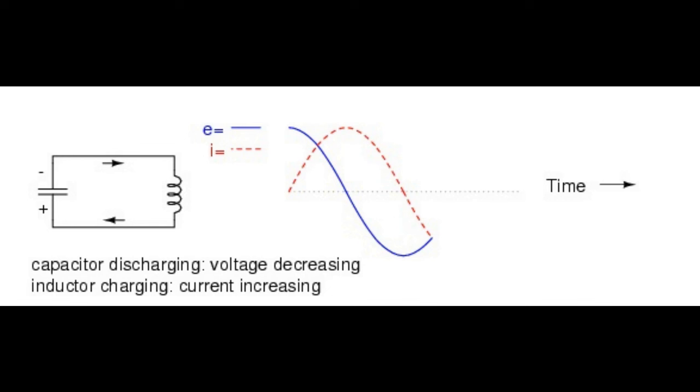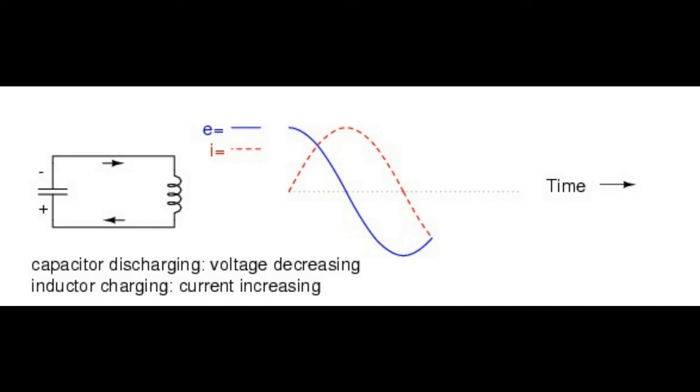The capacitor as before will begin to discharge through the inductor causing an increase in current in the opposite direction as before and a decrease in voltage as it depletes its own energy reserve. Eventually, the capacitor will discharge to zero volts, leaving the inductor fully charged with a full current through it.